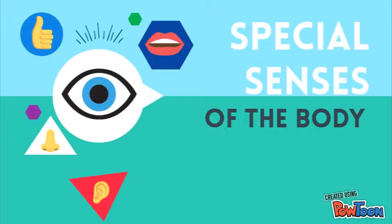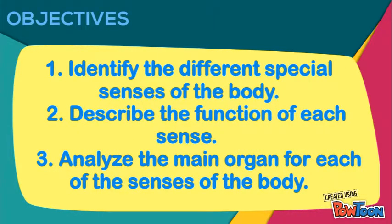Special Senses of the Body. Objectives: 1. Identify the different special senses of the body. 2. Describe the function of each sense. 3. Analyze the main organ for each of the senses of the body.